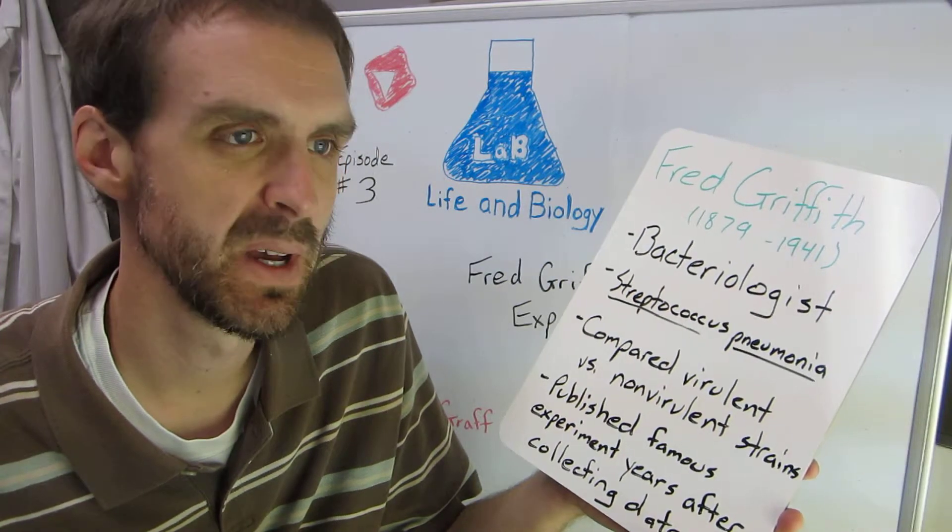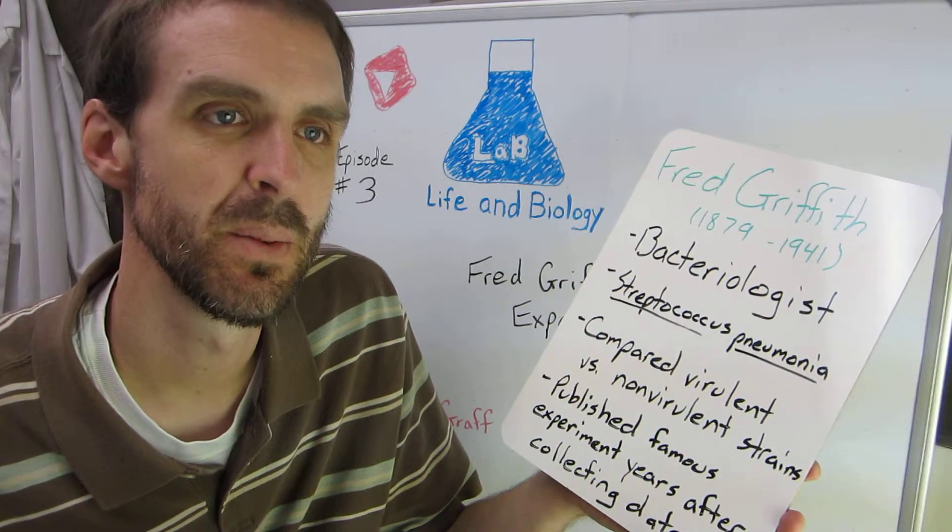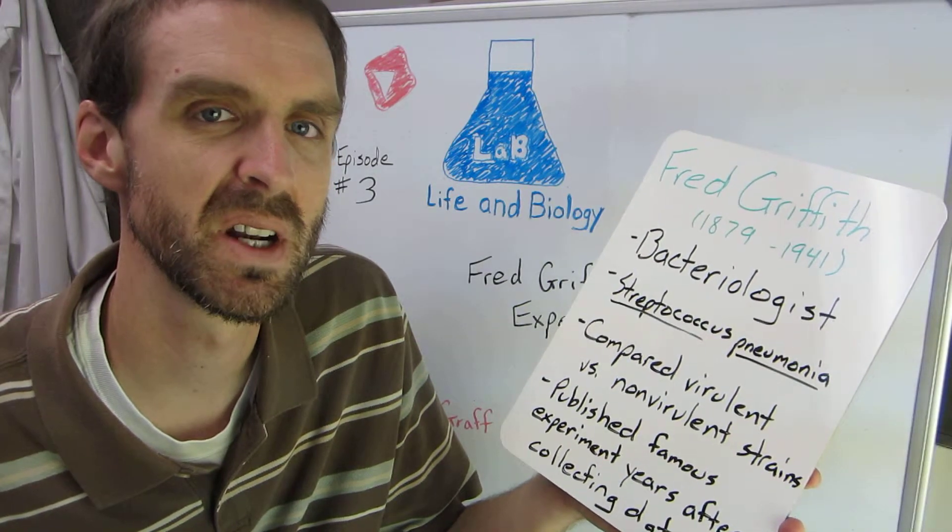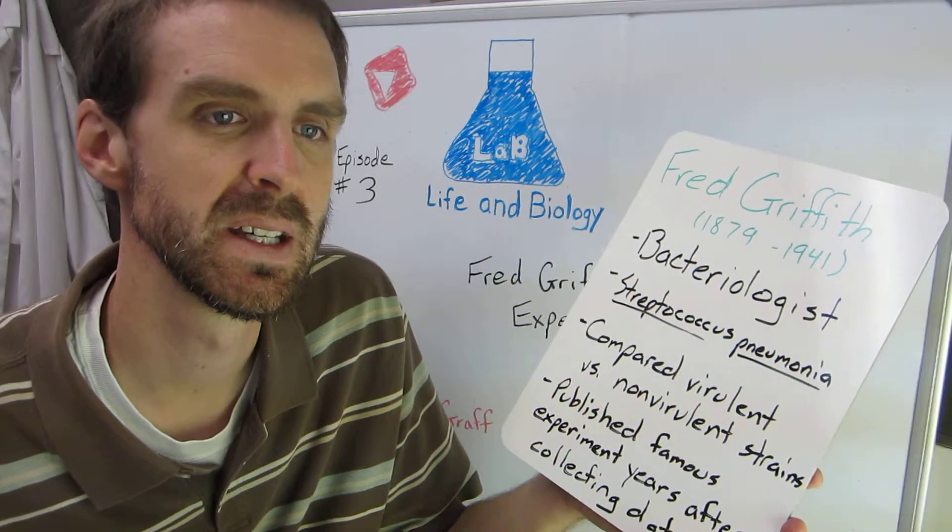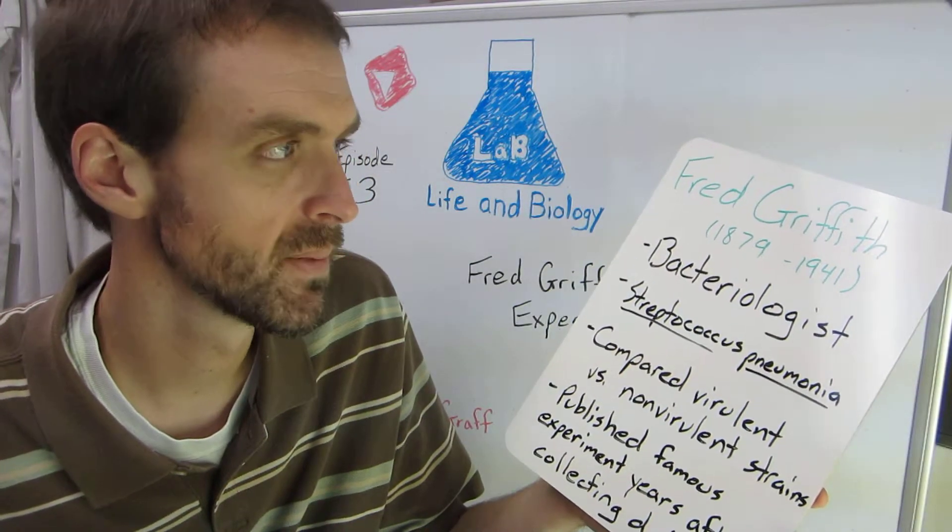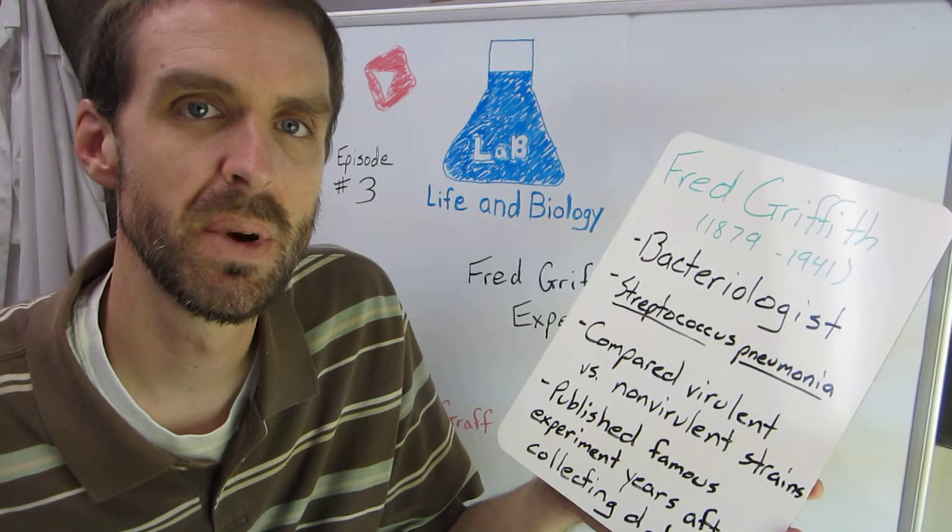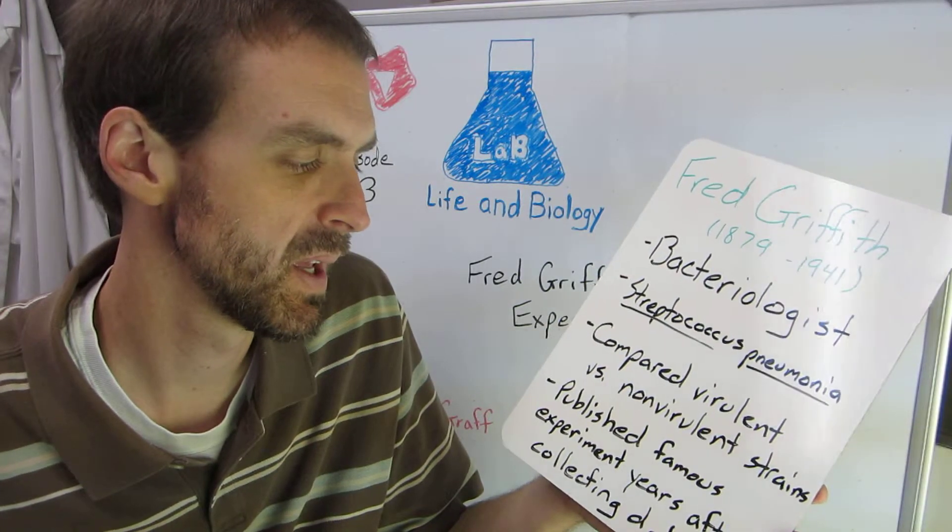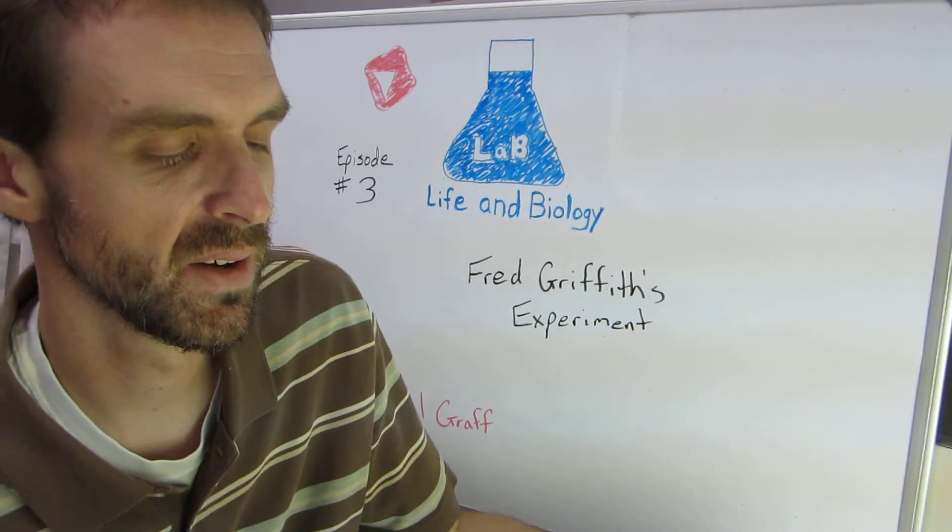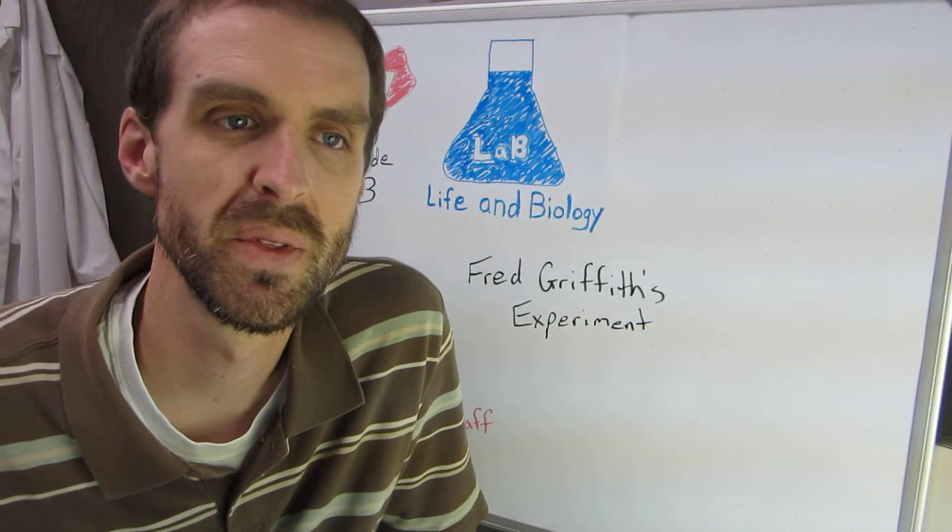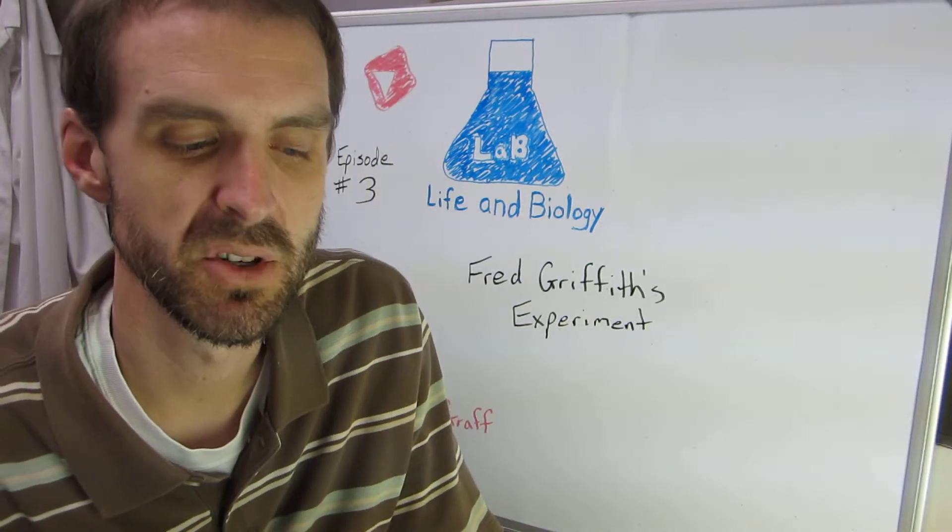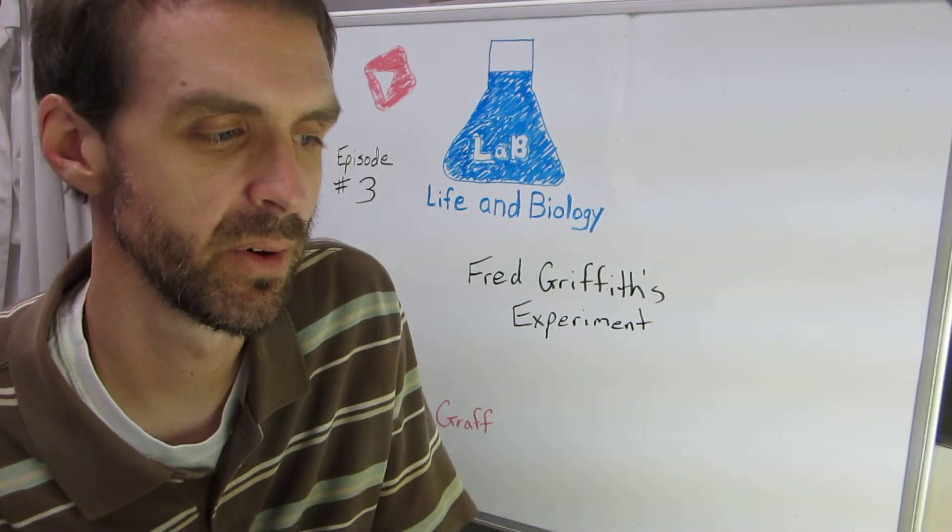With Gregor Mendel, he published his data right away but it wasn't picked up by the scientific community until years later. In this case, Fred Griffith did his experiment and then quite a while later, after other groups had come up with the same data, he ended up publishing his work so he could get credit for it.